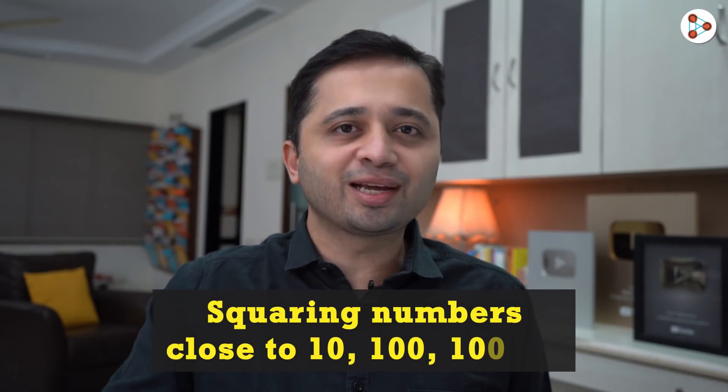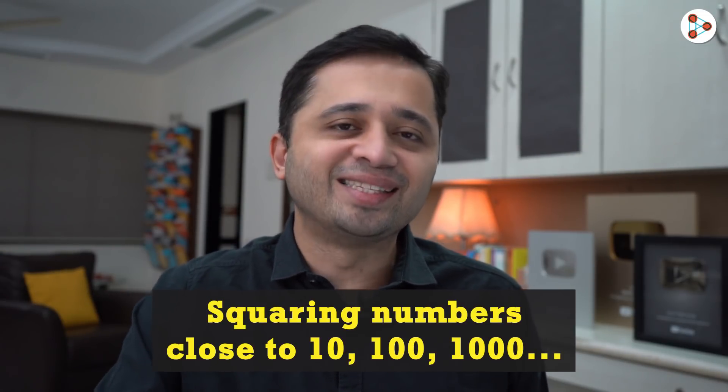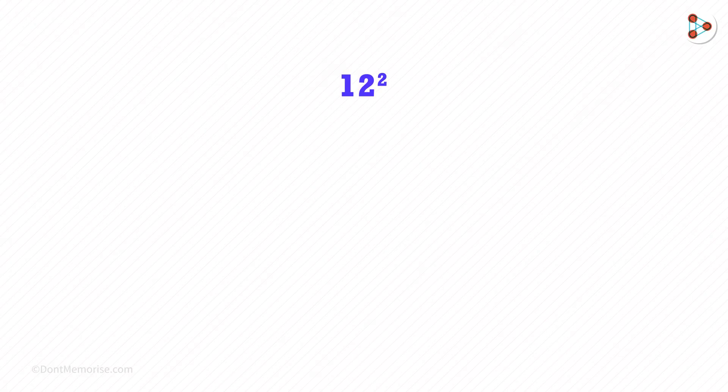How can we quickly square numbers that are close to powers of 10? Let's see. Let's take 12 squared. This number is close to 10, hence the base will be 10.